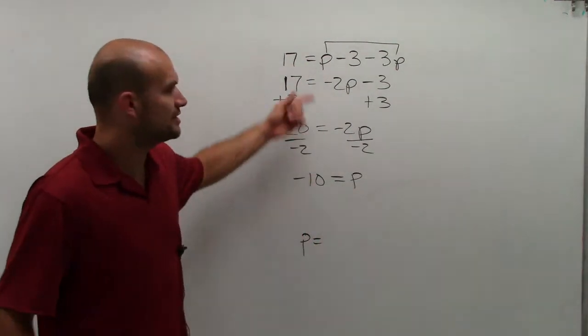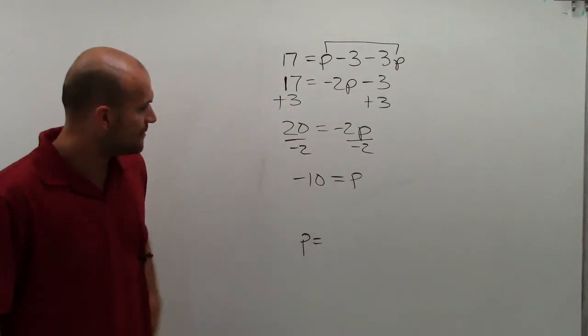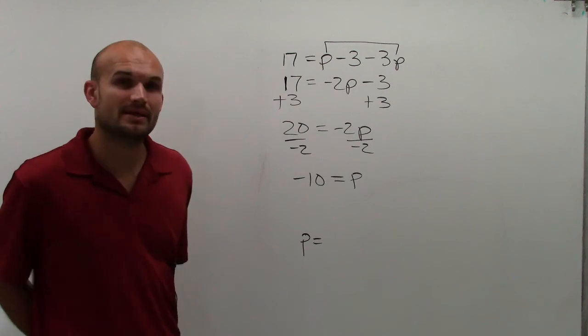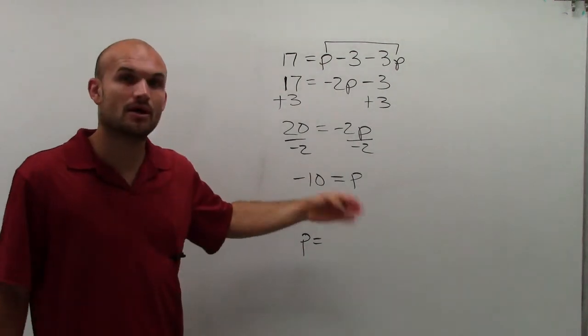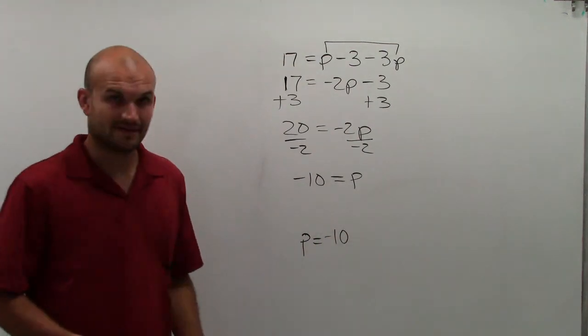Now, make sure I use the properties of equality, right? On both of those, do it on both sides of the equation. Now when you take a look at this, we say negative 10 equals p. Well, negative 10 equals p, or also we like to write it as p equals negative 10.